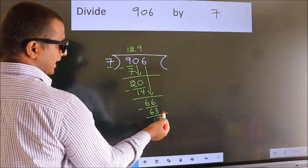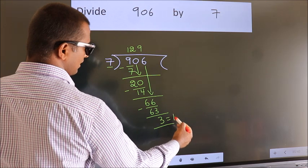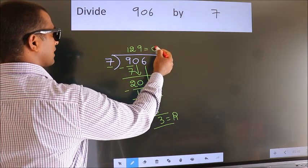No more numbers to bring it down. So we stop here. This is our remainder. This is our quotient.